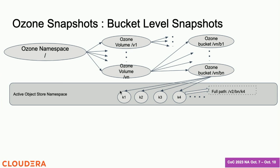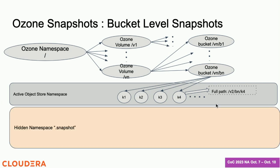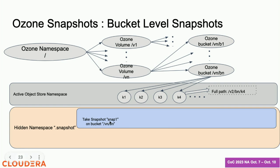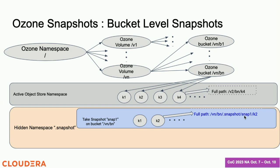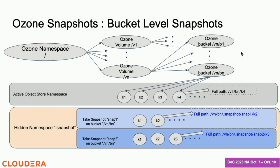How do I access snapshots? In the active object store namespace you reference objects with their full path — for example, slash V2 slash VN slash K4. We have a hidden namespace called dot-snapshot. When you take a snapshot on a bucket, we make all of it available in an alternate namespace. You can access it with the expanded path: slash VN slash VN dot-snapshot, then go to snap-one, and within snap-one you continue with the rest of the key path.